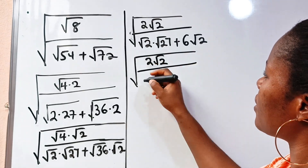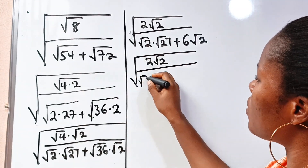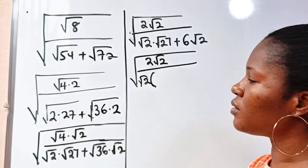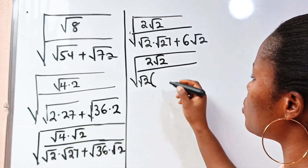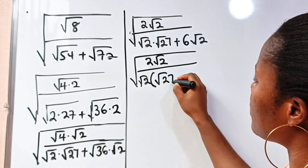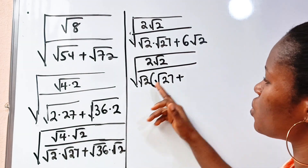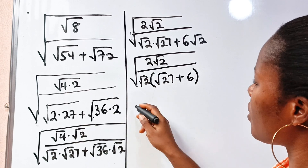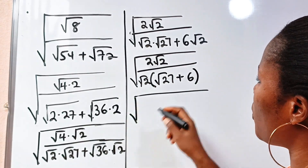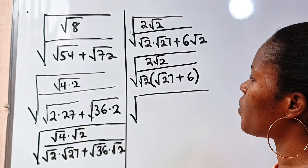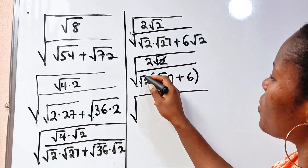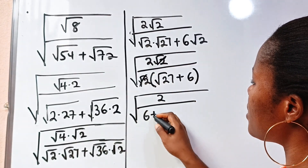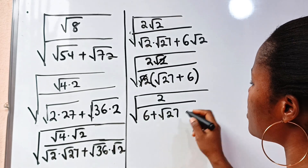So this is equal to the square root of 2 root 2 divided by — let's factorize root 2 out. Root 2 multiplied by root 27 divided by root 2, we remain root 27; plus 6 root 2 divided by root 2, which gives us 6. So we have this equal to the square root of 2, divided by 6 plus root 27.